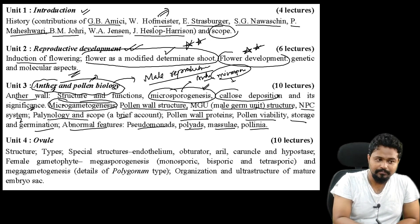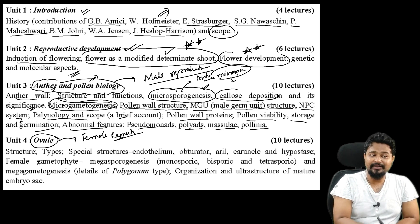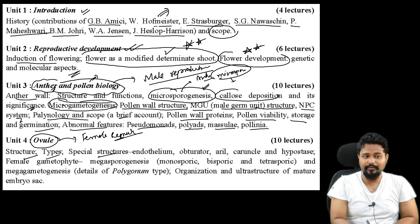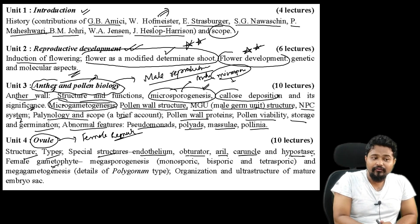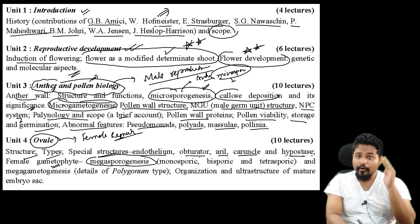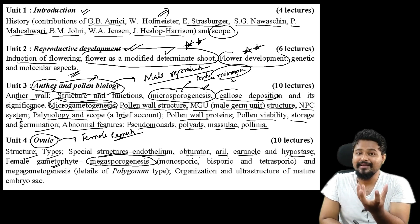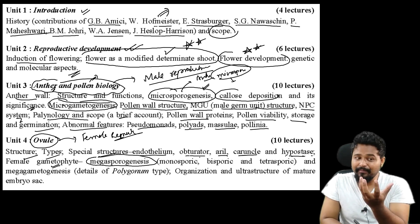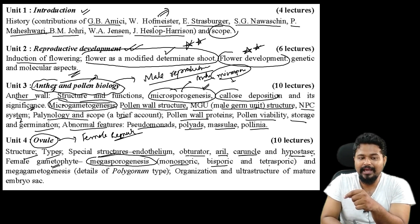Unit 4 covers the female reproductive structure. We need to study special structures: endothelium, obturator, arril, caruncle, and hypostase. Female gametophyte development - megasporogenesis, the process of formation of megaspores. Megaspores develop into the female gametophyte or embryo sac. Types include monosporic, bisporic, and tetrasporic megasporogenesis.